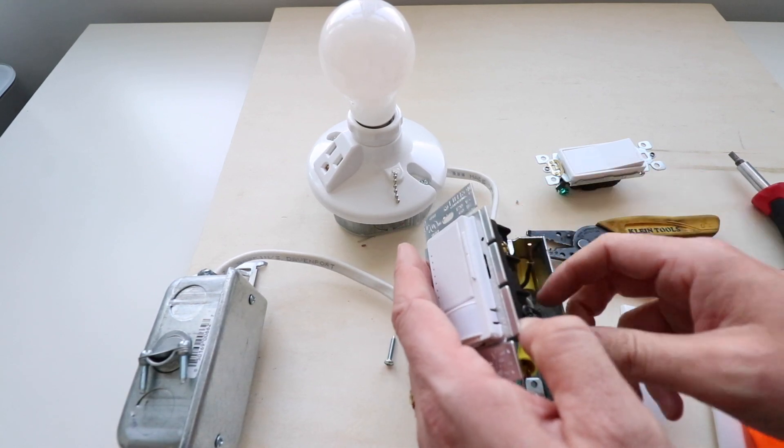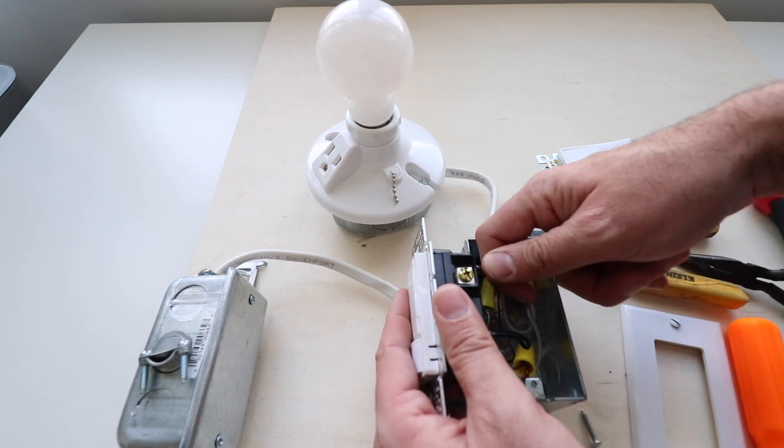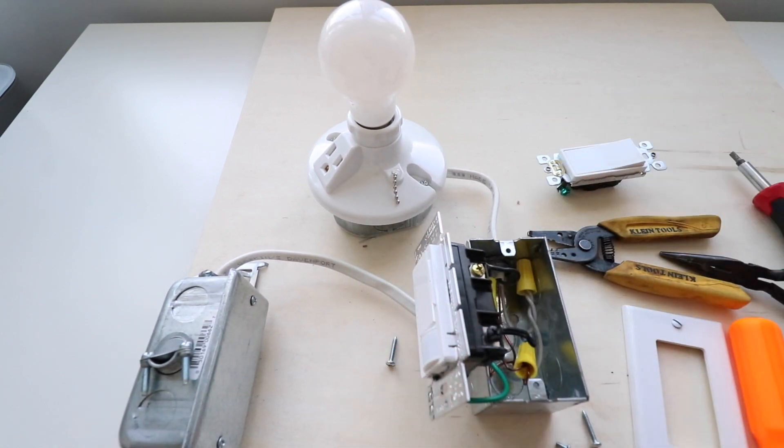Okay. There we go. So we've got our hot wire in there and now we're just going to put our load wire in there. Do the same thing up here and we're just going to push it in. So now we have all of our wires installed. This is almost ready to go back into the switch box.